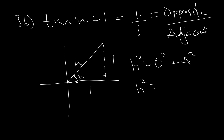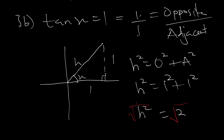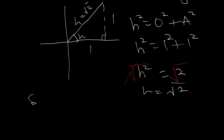From Pythagoras' theorem, h squared equals opposite squared plus adjacent squared. So h squared equals 1 squared plus 1 squared, which gives us 2. Taking the square root of both sides, h equals the square root of 2. Now finding sine of x: sine equals opposite over hypotenuse, and our opposite is 1 and hypotenuse is the square root of 2.